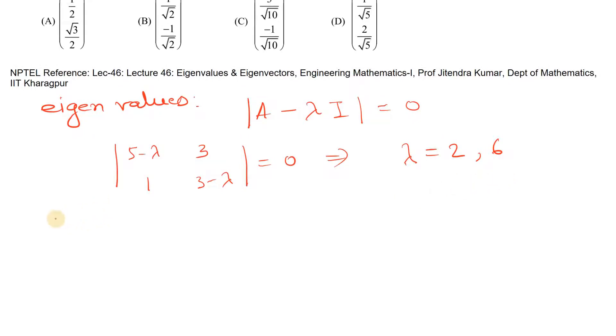Now we can find eigenvectors. For eigenvalue lambda is equal to 2, let's find the eigenvectors. So A minus 2 iota into x should be equal to zero.